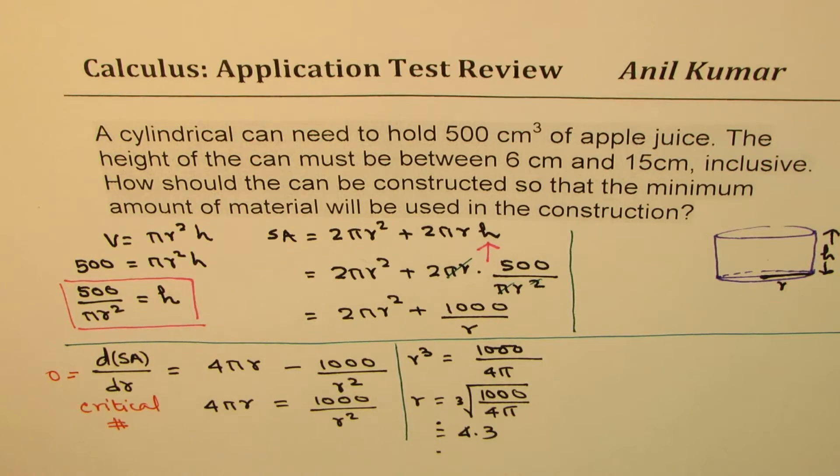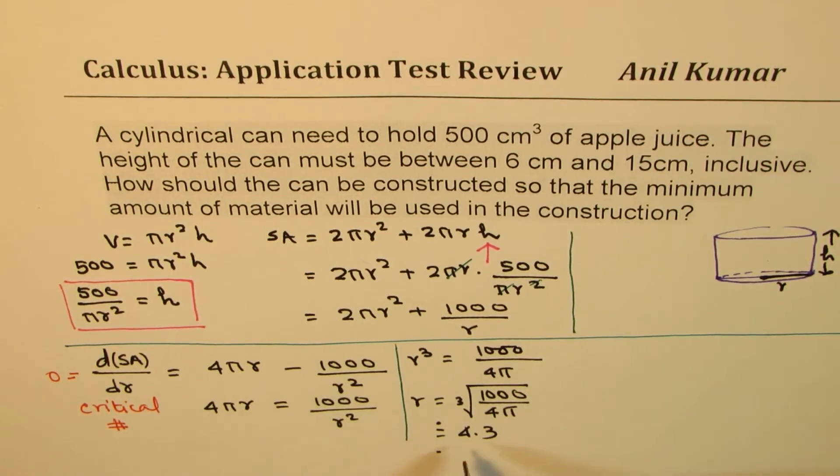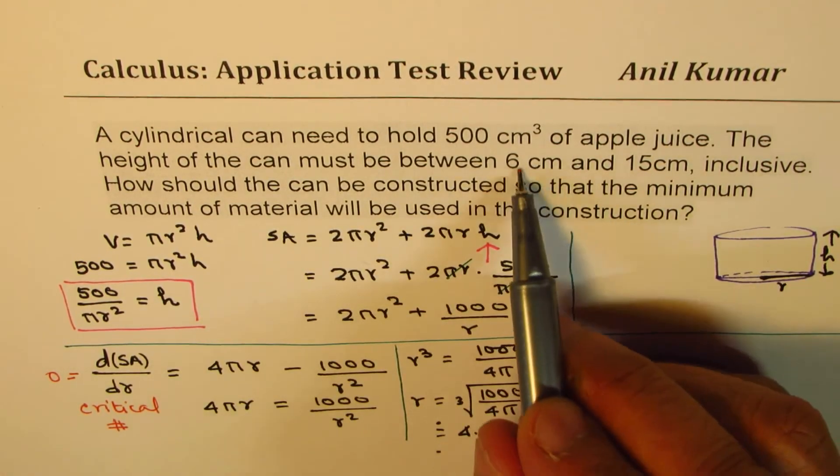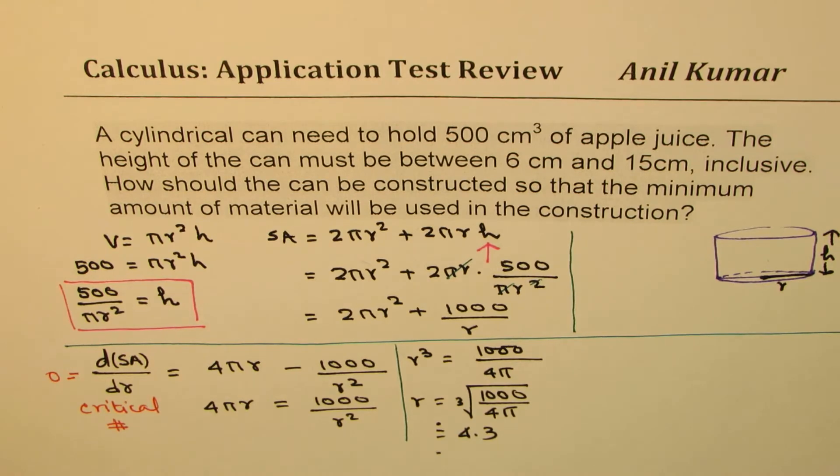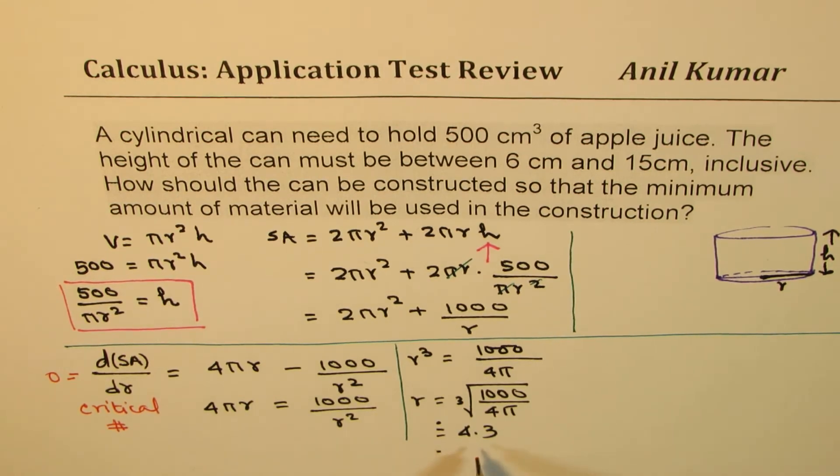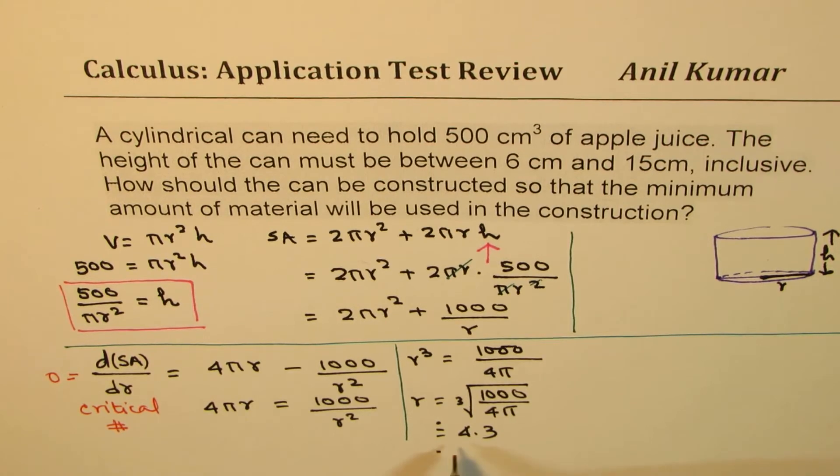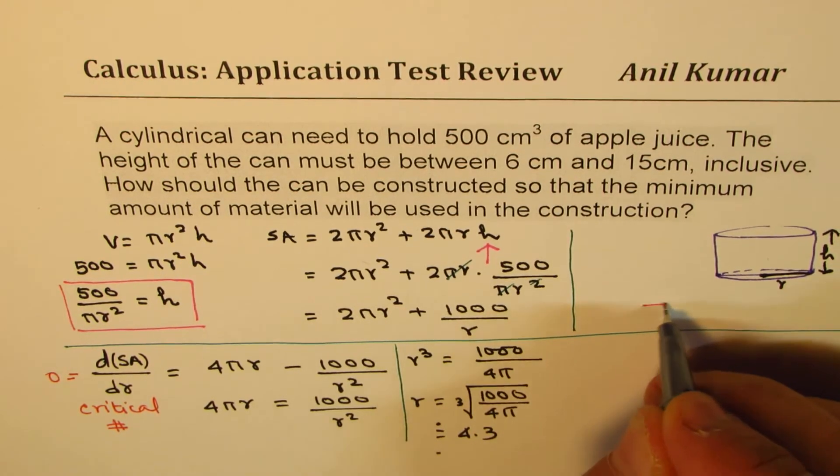Now, one part of the question is we need to check height. Is the height between these two permitted values or not? The second part is to confirm that this gives you minimum material cost. So let's analyze that.